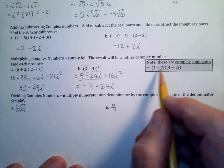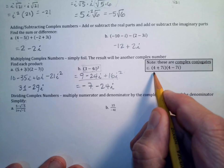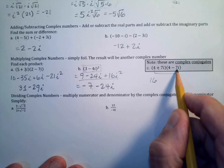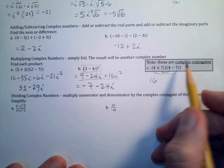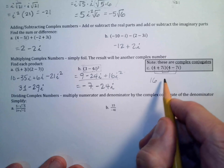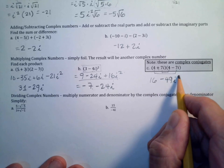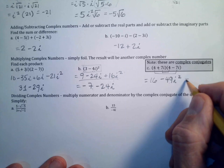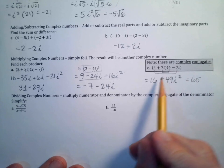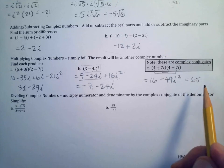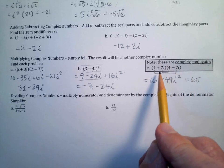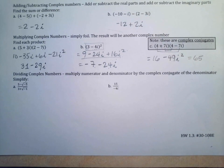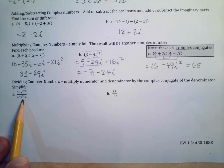Complex conjugates are pairs like (4 + 7i) and (4 - 7i) — same terms, opposite sign between them. When you FOIL conjugates, the outer and inner terms cancel, leaving: 4² - (7i)² = 16 - 49i² = 16 + 49 = 65. The result is purely real with no i's. This is useful because multiplying by a conjugate eliminates i from a denominator.